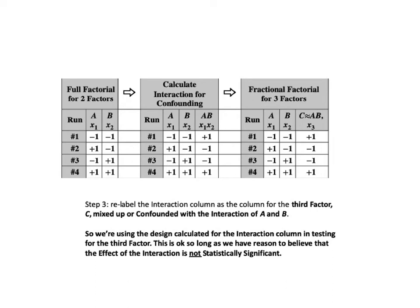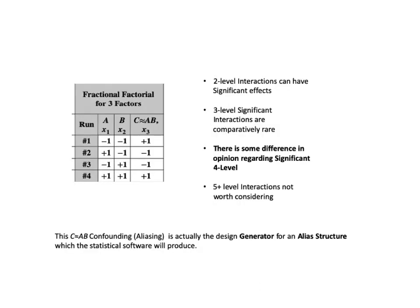Step 3 is to relabel the interaction column as the column for the third factor C — mixed up with, or confounded with, the interaction of A and B. So we're using the design calculated for the interaction column in testing for the third factor. This fractional testing design has 4 runs for 3 factors instead of the 8 runs a full factorial would have. This is acceptable so long as we have reason to believe the effect on the interaction is not statistically significant. Not infrequently, 2-level interactions have significant effects and can be very useful in explaining apparently strange process outcomes. Significant 3-level interactions are comparatively rare, and significant 5-or-more level interactions are generally not worth considering.